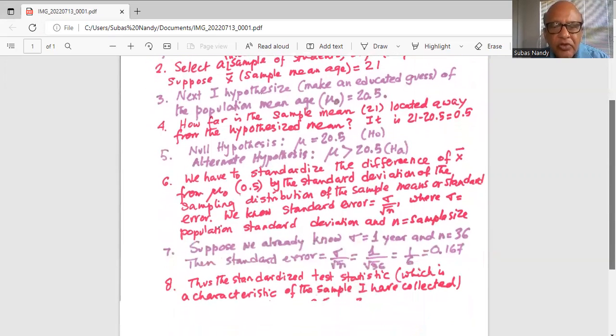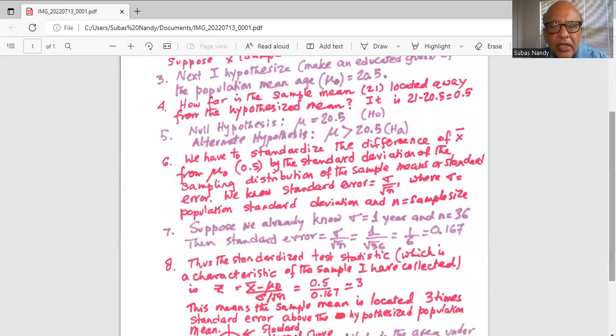Suppose we already know sigma equal to one year and we know the sample size n is 36. Then the standard error is 1 divided by square root of 36 or 1 divided by 6 which is approximately 0.167.